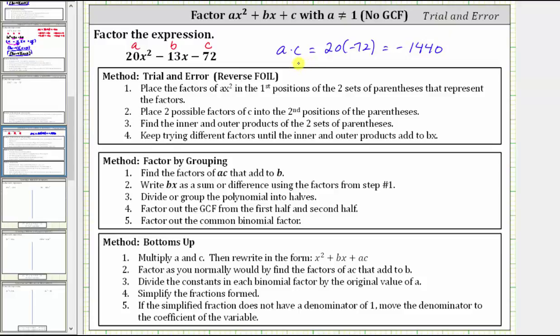As the absolute value of a times c gets larger and larger, the methods of factor by grouping and bottoms up get more and more complicated, and therefore, for this trinomial, we will only use the method of trial and error. Let's do this on the next slide.